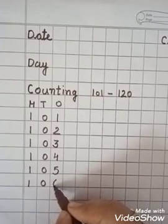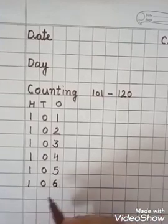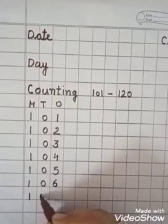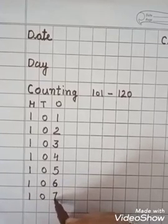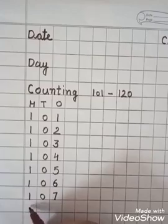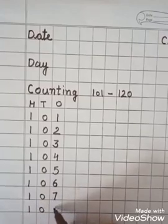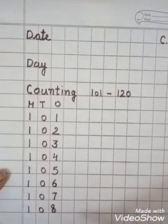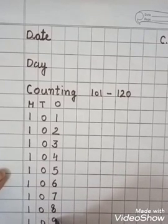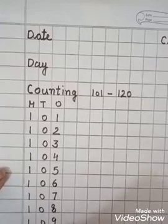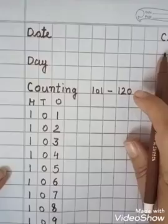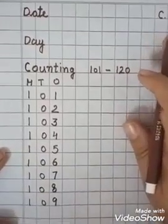Very good! What comes here? 6. 1, 0, 6 — 106. 1, 0, 7 — 107. 1, 0, 8 — 108. 1, 0, 9 — 109.